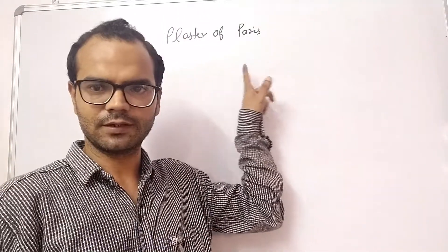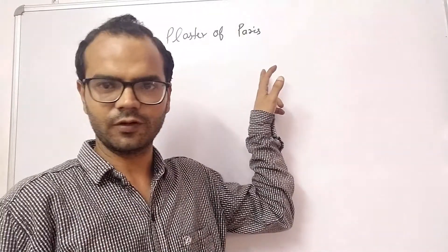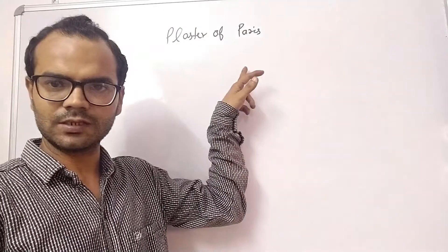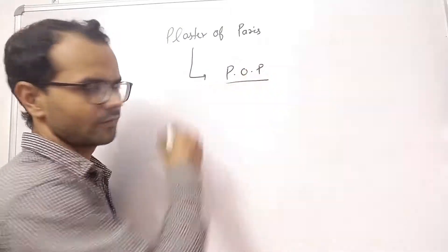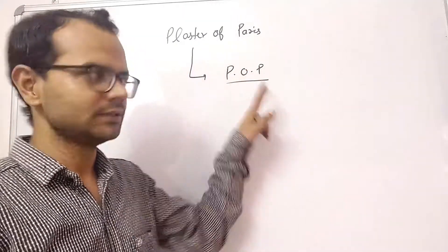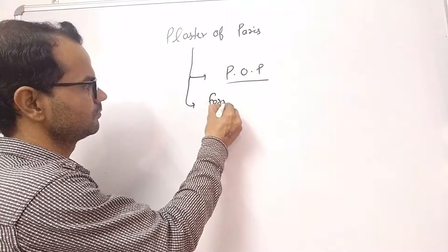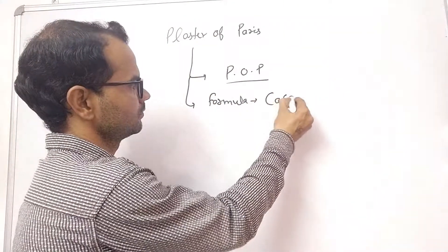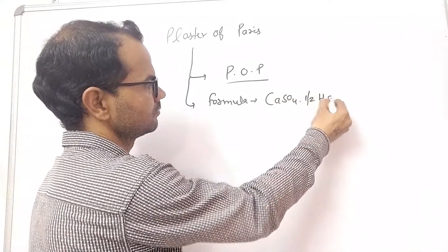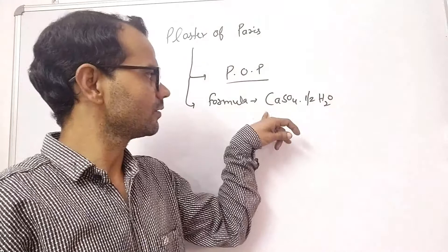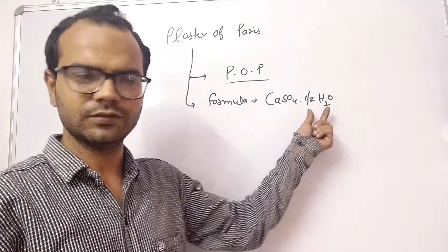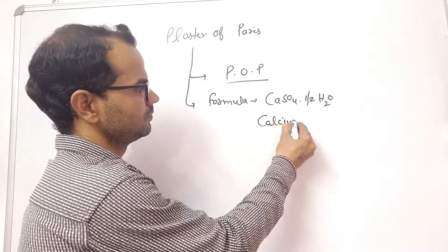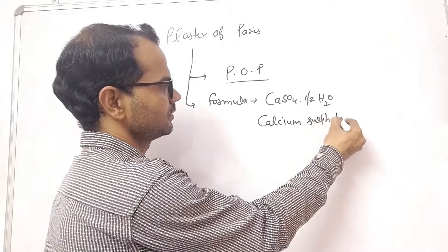Hello everyone and welcome back to my YouTube channel. Today we will discuss Plaster of Paris for Class 10, which is the last topic of the chapter. What is Plaster of Paris? In short, it is written as POP. Its formula is calcium sulfate hemi-hydrate — 'hemi' means half, 'hydrate' means water molecule.